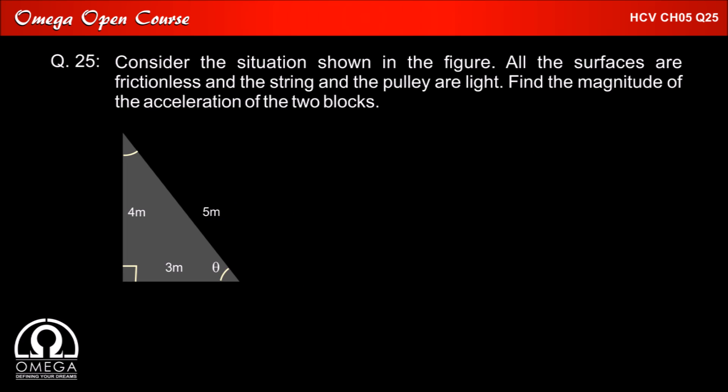Now, let us rotate the wedge. What we have is a right angle triangle with base 3 meter, perpendicular 4 meter, and hypotenuse 5 meter, and the angle that the hypotenuse makes with the base is theta. Sin theta is perpendicular by hypotenuse, that is 4/5. Cos theta is base by hypotenuse, that is 3/5.